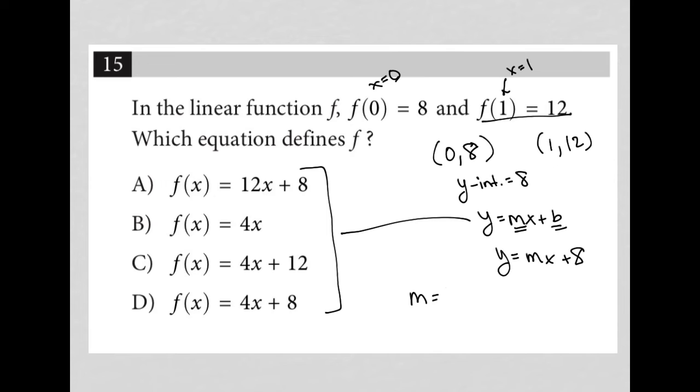Well, m is equal to y2 minus y1 over x2 minus x1. I can call this x1 and y1 and call this x2 and y2.